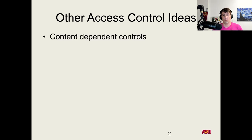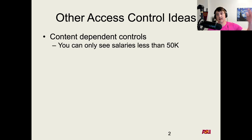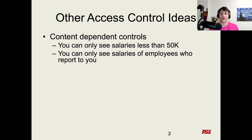One thing that probably impacts your life all the time, if you're using a streaming service like Spotify or Netflix, is controls based on content. So DRM and other types of things — you may have access control that actually depends on the content being seen. For instance, you may be at a certain level in your company and can only see people's salaries that are less than 50k in the system. This may be a policy that as an organization you want to implement — you can only see the salaries of employees who report to you. So there are notions of actual organization structure, what the organization wants, and who can access what information.